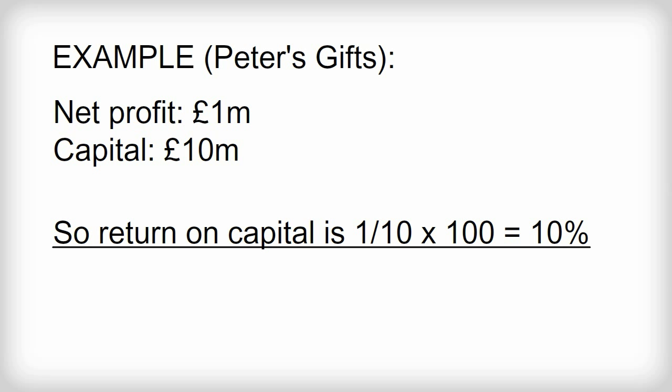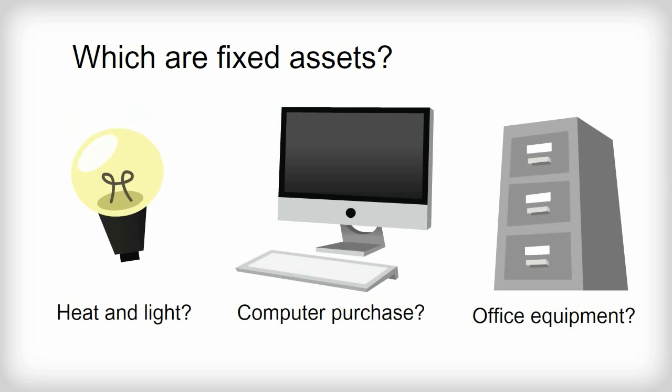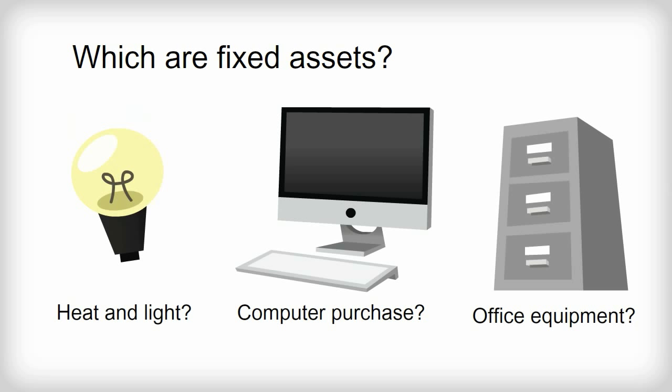The money tied up in fixed assets is capital invested. When working out return on capital, do not muddle up fixed costs with fixed assets. Fixed costs, along with variable costs, are running costs — those involved in actual trading. Fixed assets are something different. Fixed assets may include things such as buildings, land, machinery and vehicles. To make a profit, capital — money — has to be tied up in this sort of asset rather than being used for other purposes.